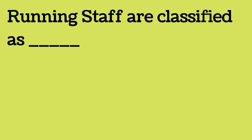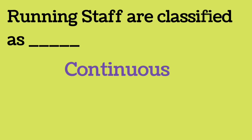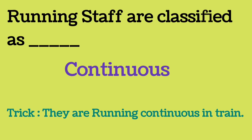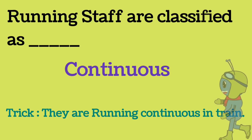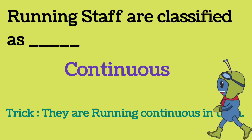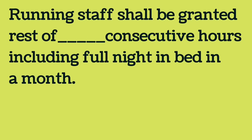Running staff are classified as continuous. Here is a trick to remember: they are running continuously in trains, so they are classified as continuous.